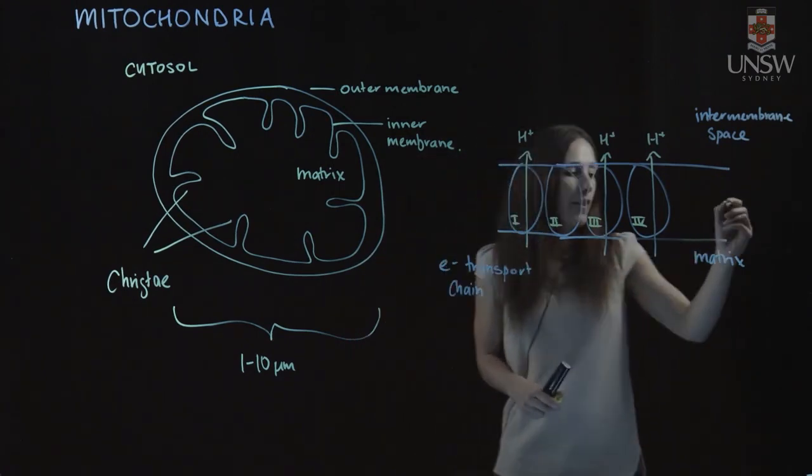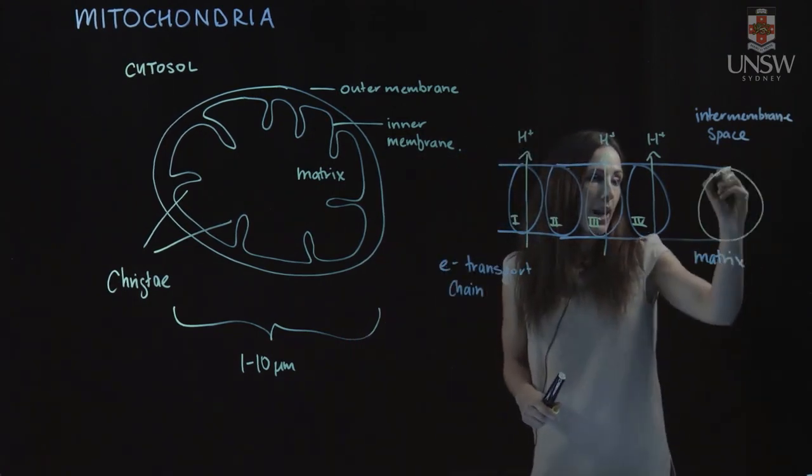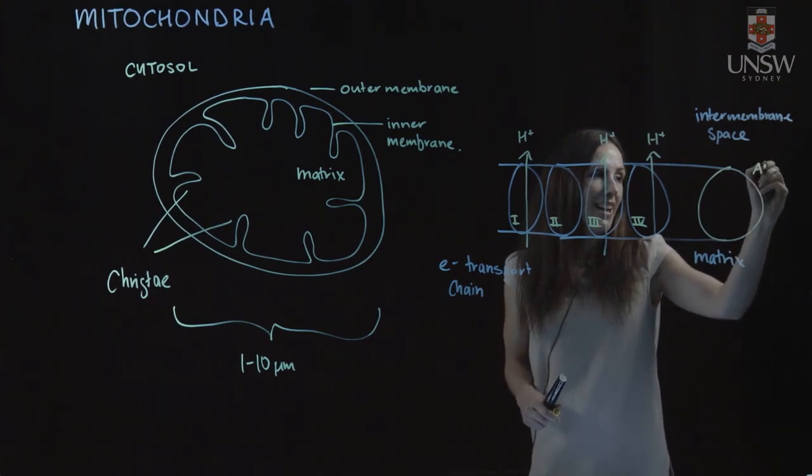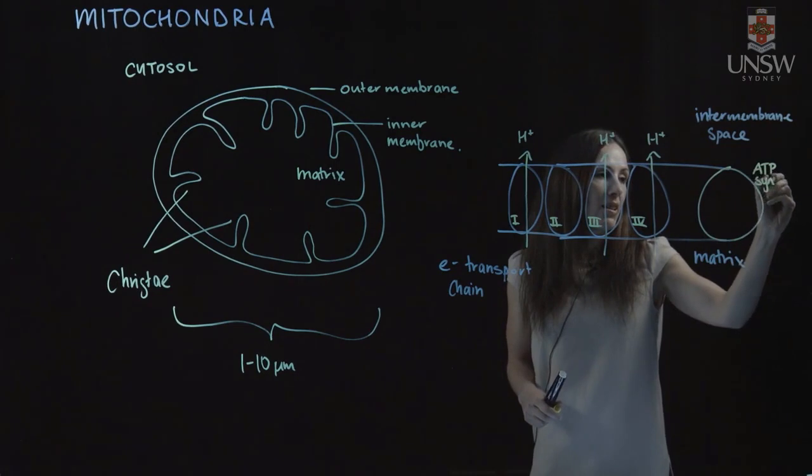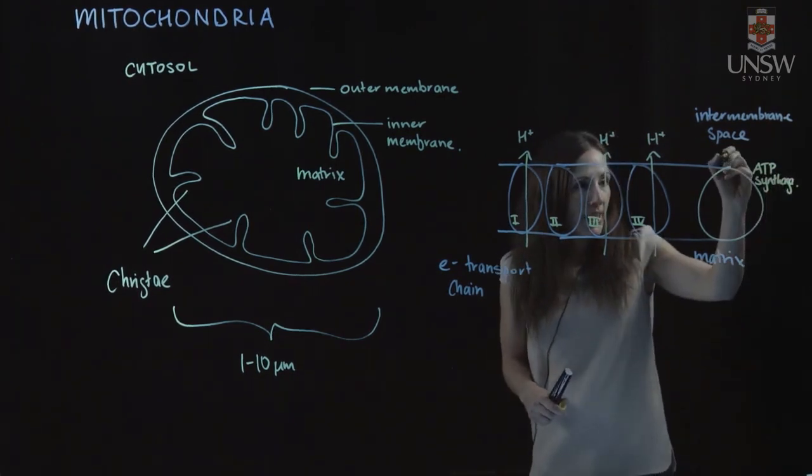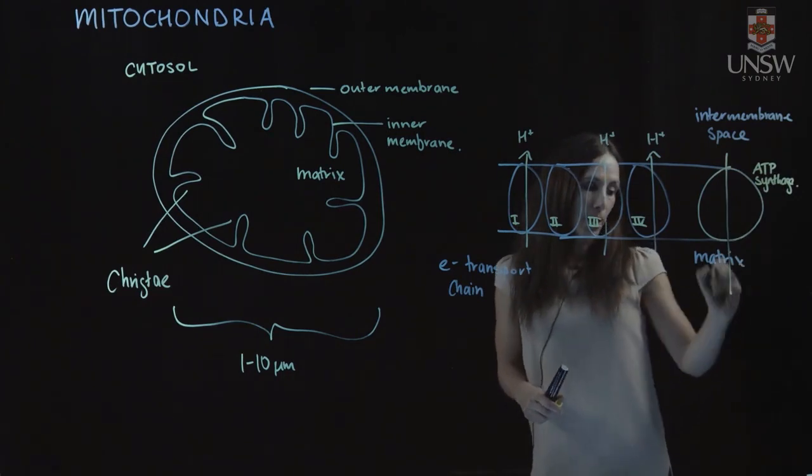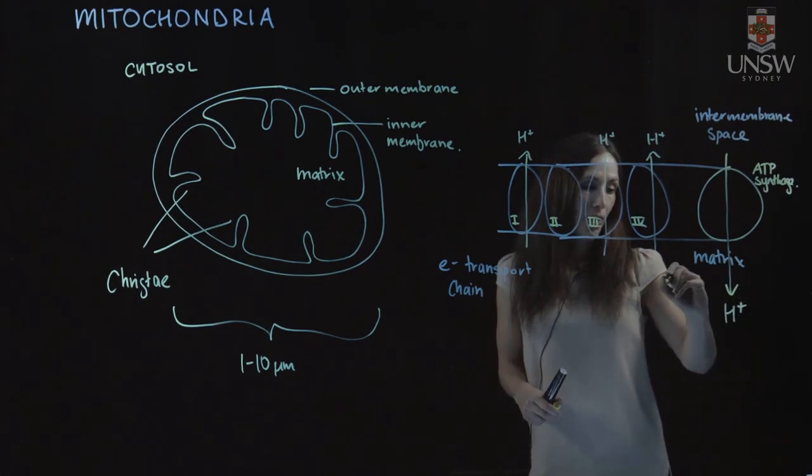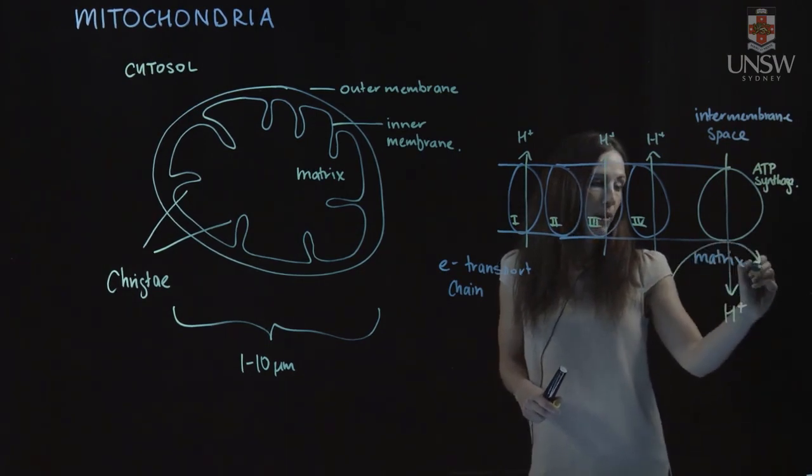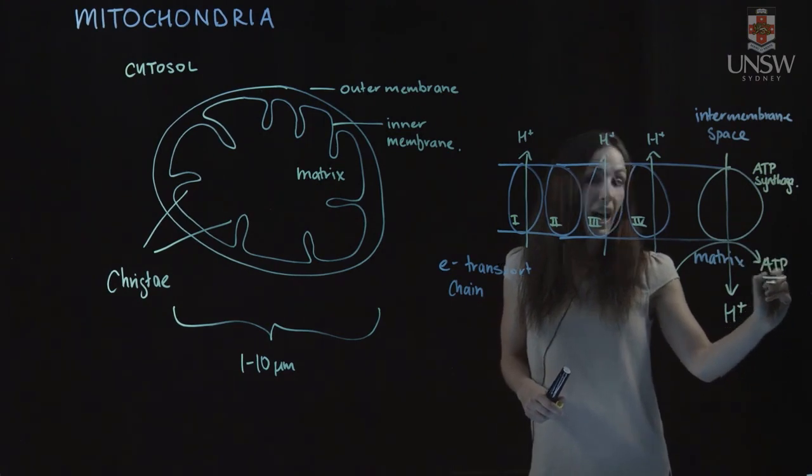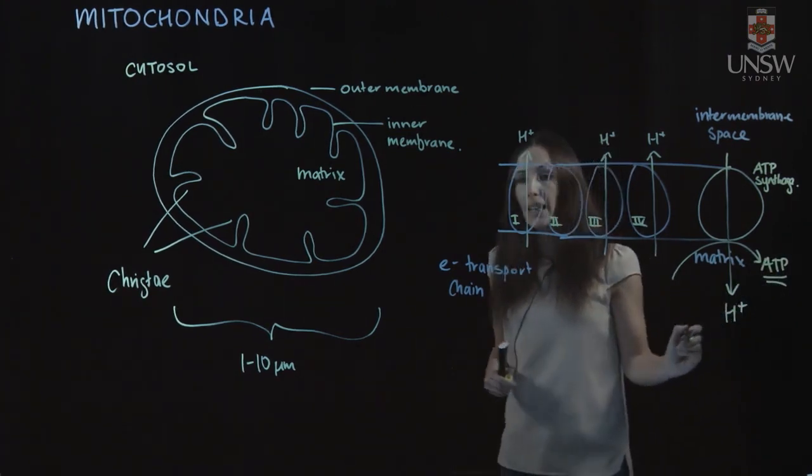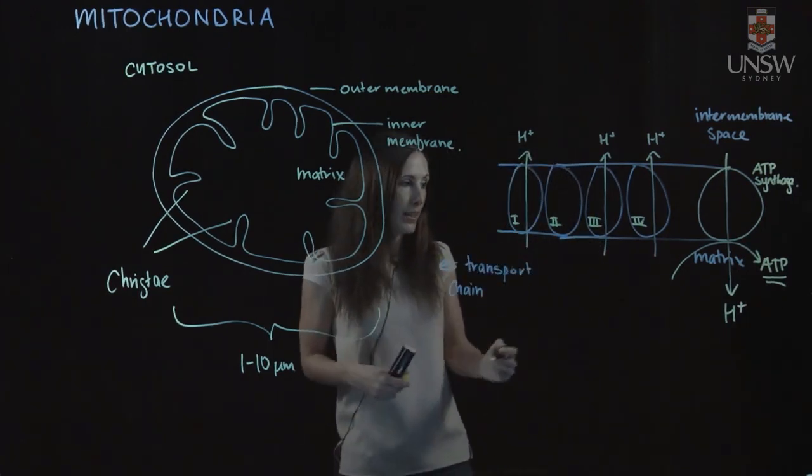We then have another protein called ATP synthase. And this brings those protons back into the matrix, and as it does that, it performs an important role where it generates ATP, our currency for energy in the cell. That means we can use the ATP as our energy source for carrying out different reactions.